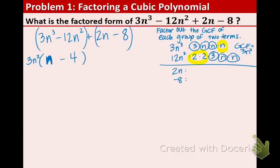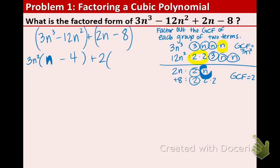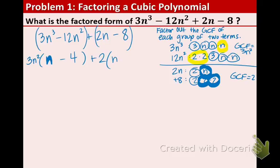Now, let's do the GCF of the next pair of terms. Two n is just two times n and negative eight. Well, don't worry about the negative. Eight is two times two times two. The GCF is just two. So, put the GCF in front. And then, what's left? Well, whatever we did not circle. So, I'll highlight it again. n and two times two, which is four. So, n minus four.